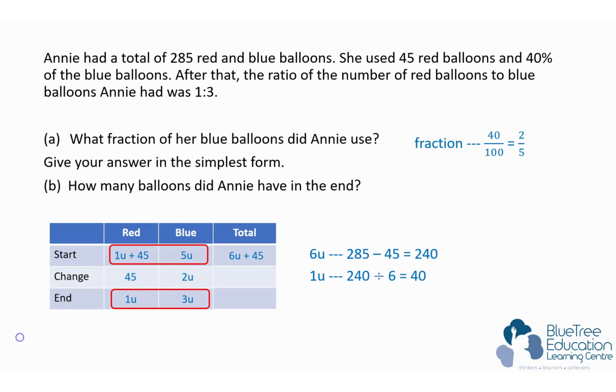which is 4 units. So the number of balloons Annie has in the end is 4 units, which is 40 times 4, which is 160 balloons. This question uses the table method - please try it on your own. Fill in as much information into the table and then solve it.